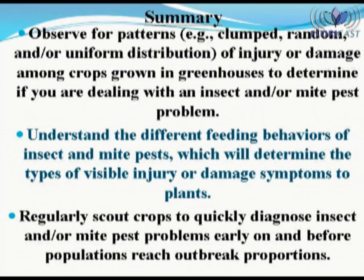In summary, in order to accurately diagnose insect and or mite pest problems on greenhouse-grown crops, it is essential to observe patterns — for example clumped, random, and or uniform distribution of injury or damage — to determine if you are actually dealing with an insect and or mite pest problem. Remember, symptomatic patterns associated with insect and or mite pest problems will be either clumped or random, not uniform. Furthermore, it is important to understand the different feeding behaviors of insect and or mite pests in order to determine the types of visible injury or damage symptoms that will be expressed by plants. Finally, regularly scout crops to quickly diagnose insect and or mite pest problems early on and before populations reach outbreak proportions.